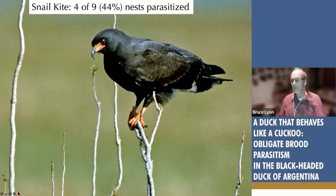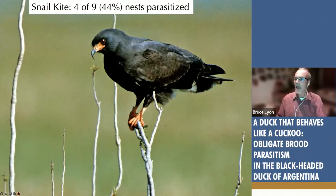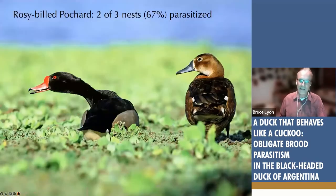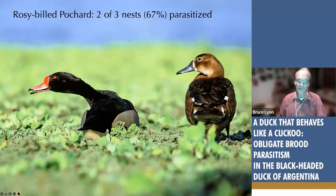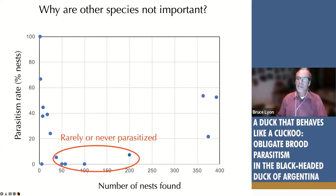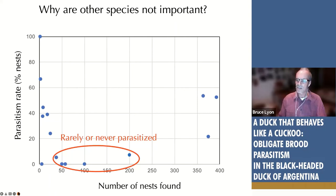An interesting case is the snail kite — almost half of its nests were parasitized, but the duck eggs were never successful there. I would have loved a picture of a duckling in a raptor nest — that would have been quite fun. The rosy-billed pochard is a duck that nests over water; it was heavily parasitized but only three nests. The second reason some birds aren't important ecologically as hosts: even if they're common, they're rarely parasitized.